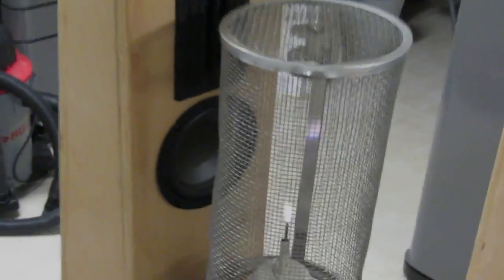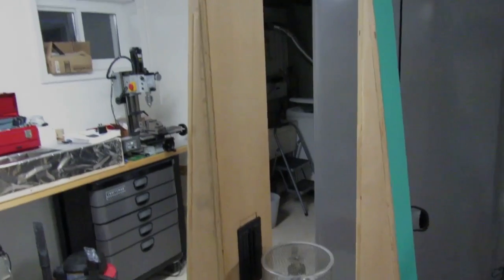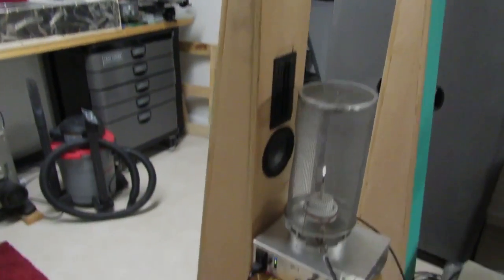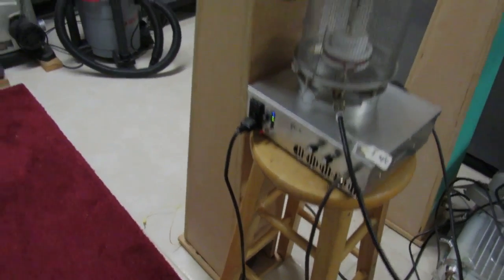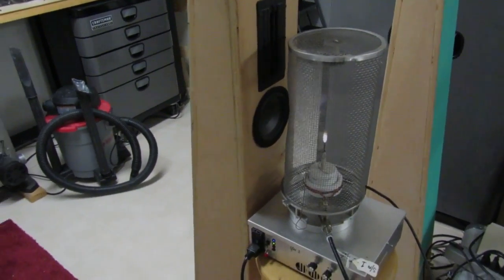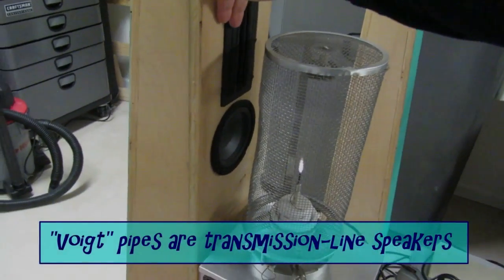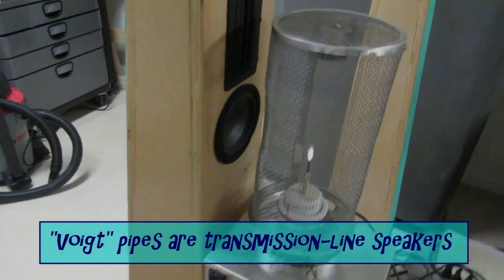Behind that there's a 5 inch woofer, and these are inside of probably a 6 foot tall lengthened enclosure with an opening in the bottom and some sound dampening material inside. It's a Voigt pipe. This is a ribbon tweeter here, but right now it's disconnected, so that's not in use.